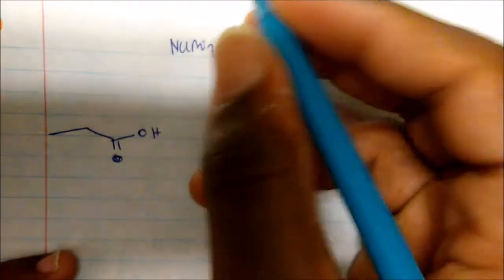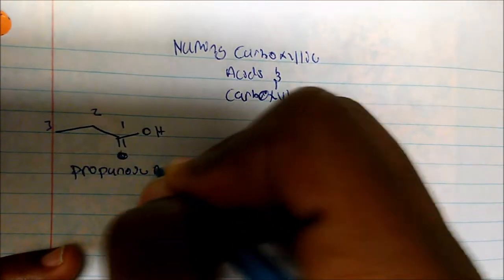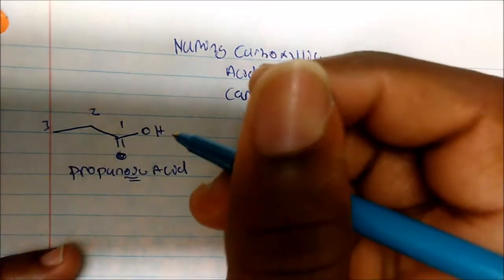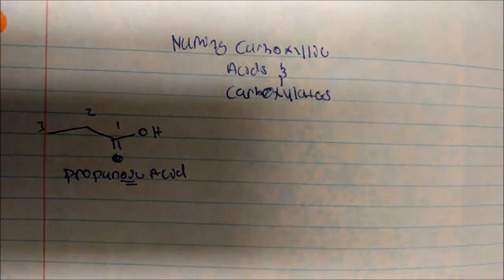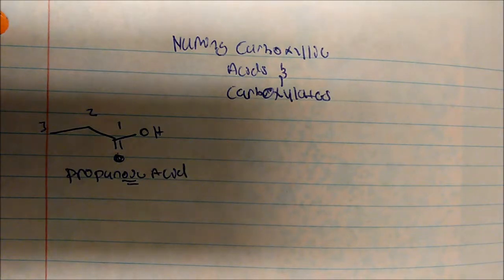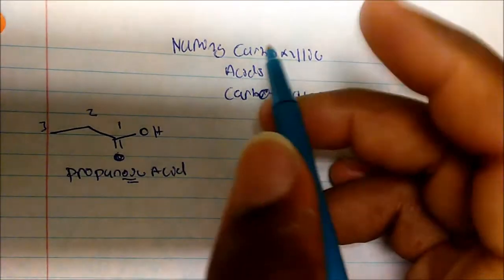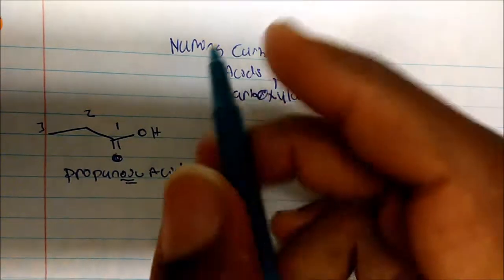If I want to name this compound here, we have carbons 1, 2, 3, so usually we say this is propane, but because it's a carboxylic acid, we use propanoic acid. This '-noic' here represents the O; it substitutes for the '-e' on propane.